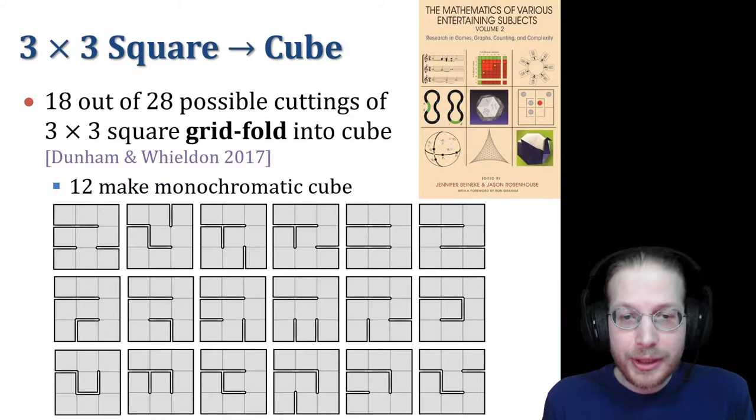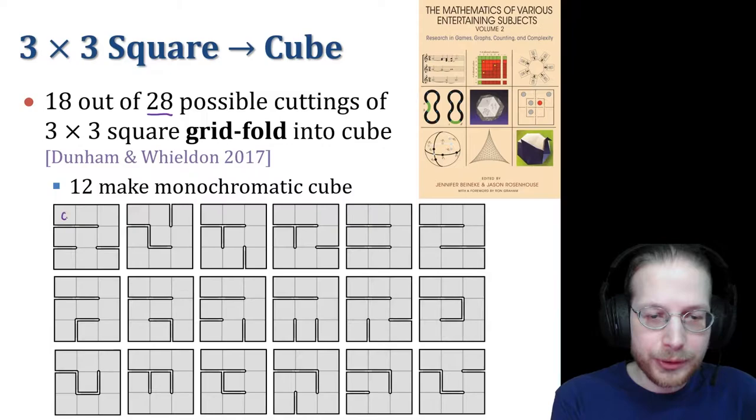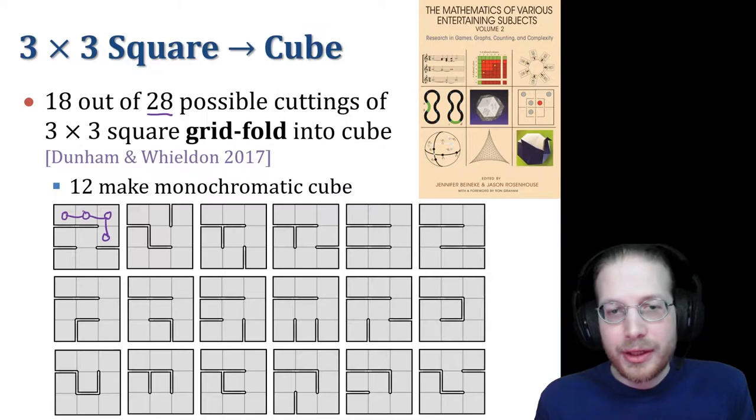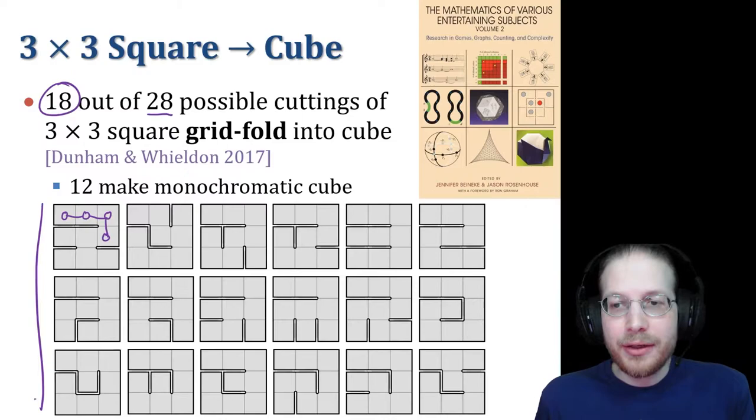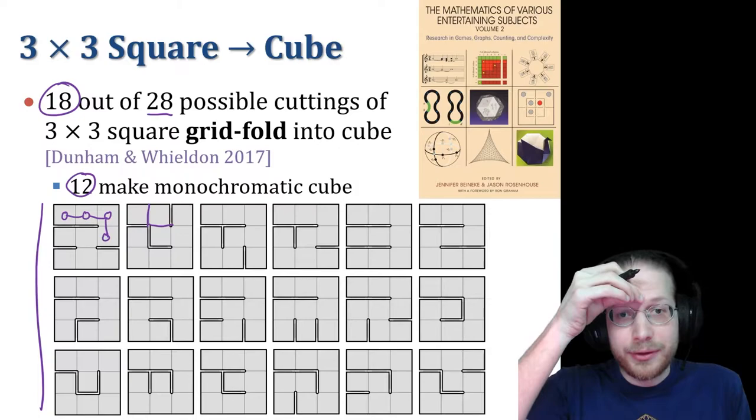For example, the cross. But not all the hexominoes do. In fact, only 11 of them do. And this is well known. Martin Gardner wrote about this in 1975.